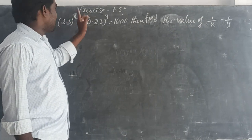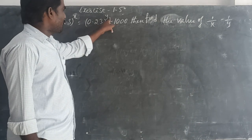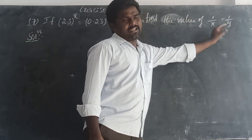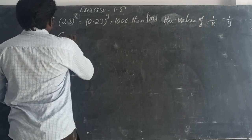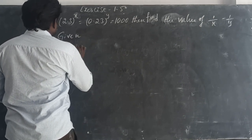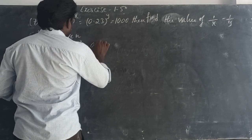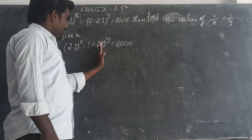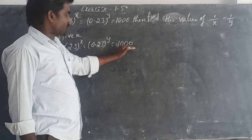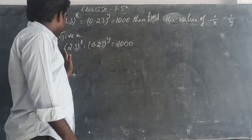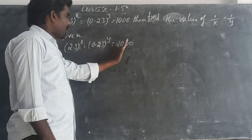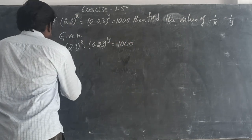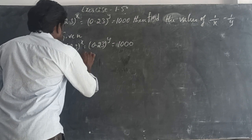Problem 7: If 2.3^x equals 0.23^y equals 1000, find the value of 1/x minus 1/y. Given that 2.3^x equals 0.23^y equals 1000, these three are equal, meaning the first exponent equals 1000 and the second exponent equals 1000. So 2.3^x equals 1000.